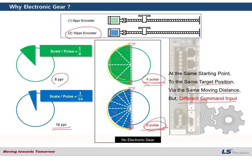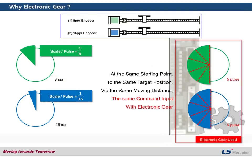Sometimes this is not convenient, because if each axis needs a very different number of pulses, it becomes complicated when working without electronic gear. However, if you set the correct value of the electronic gear ratio for each axis, you can simplify this.